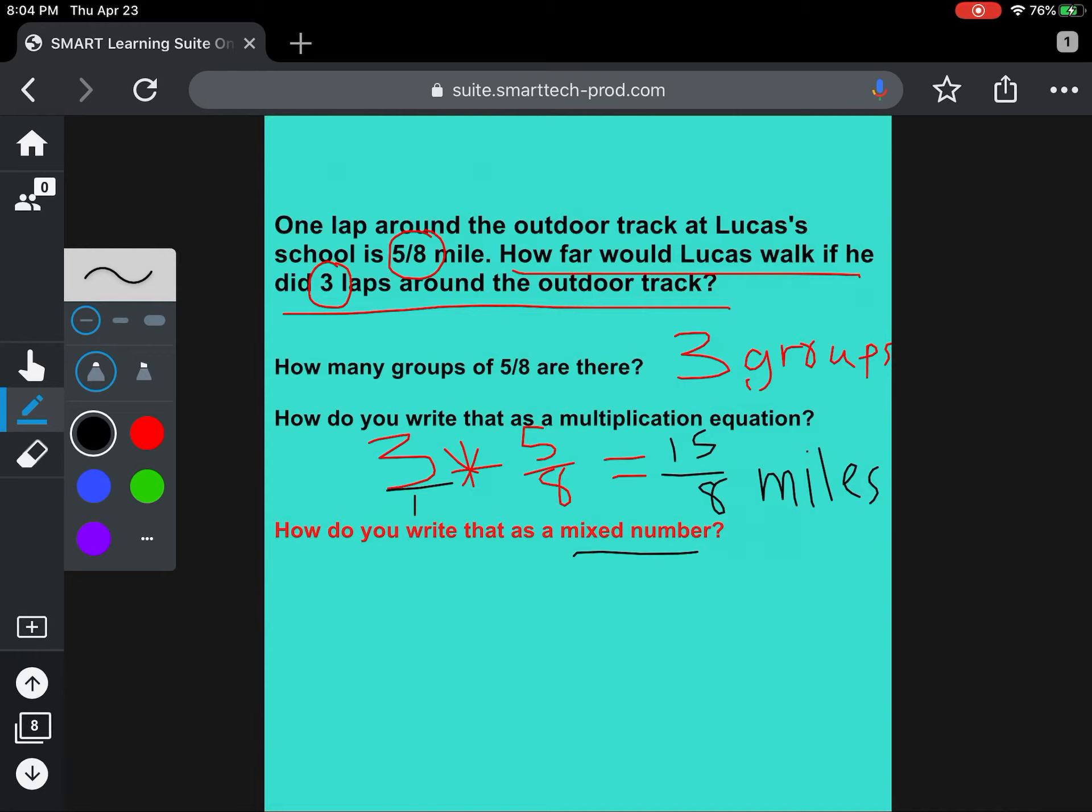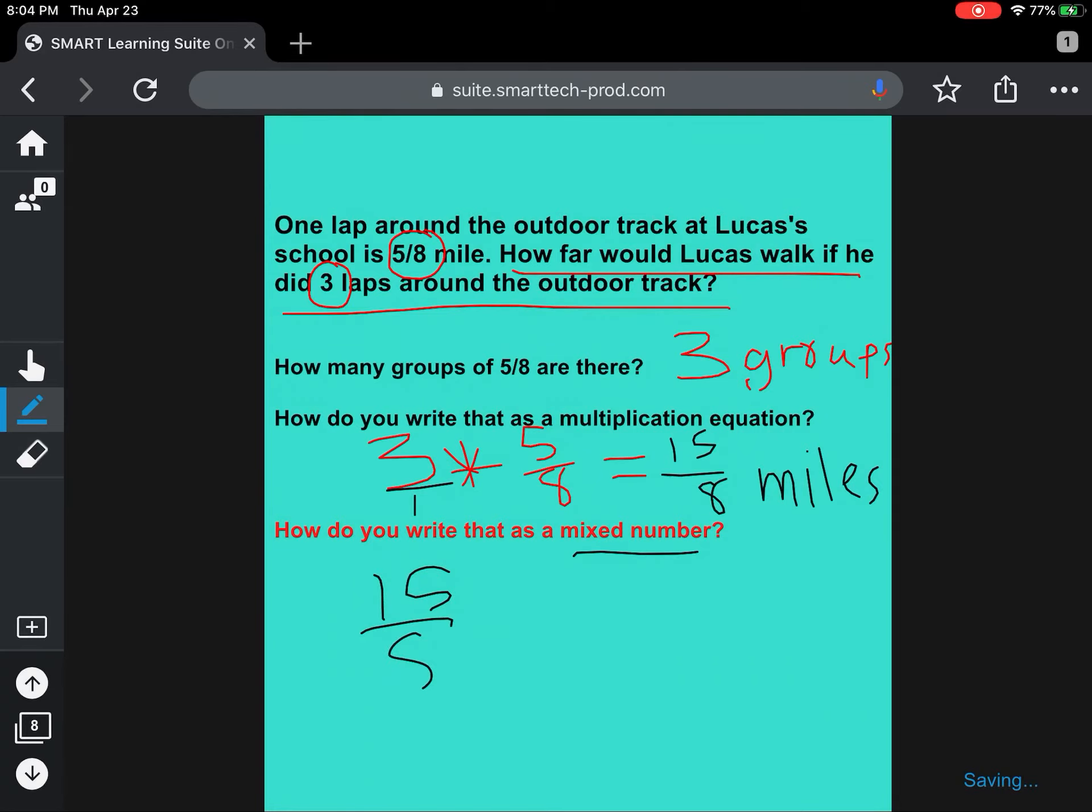If you're not sure, ask yourself, how many times does 8 go into 15? Well, one eighth is 8, and two eighths is 16, and that's more than 15. So 8 can only go into 15 one time. So I'm going to write down here 15/8 is the same as one whole, and then how many left over? Or what's the difference between 8 and 15? So 8 can go into 15 one time with 7 left over, and the denominator stays 8.